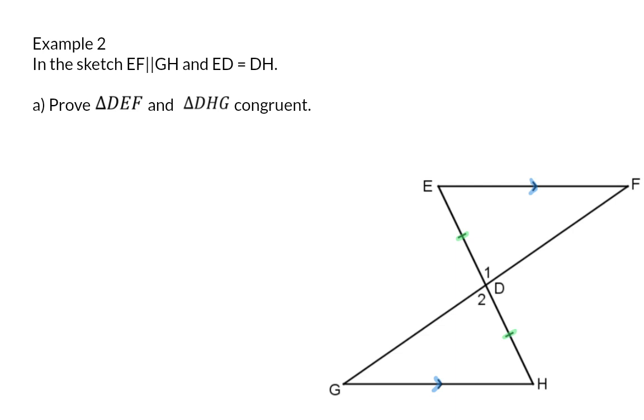The first question to prove triangle DEF congruent to triangle DHG. So we need to identify our minimum requirements. We've already mentioned that ED is the same length as DH, which means we have a pair of sides.